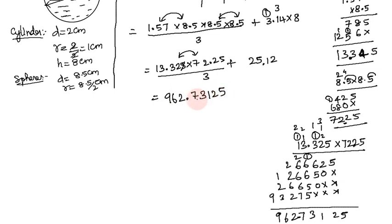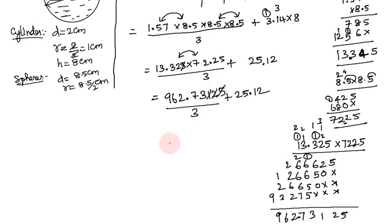So the sphere volume gives 962.73 divided by 3, and adding the cylinder volume of 25.12. Dividing: 62.73 ÷ 3 = 20.91. Then 20.91 plus 25.12.